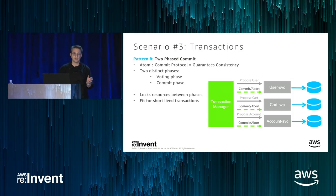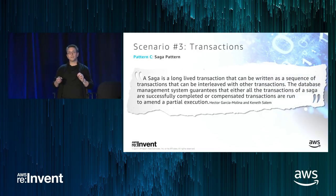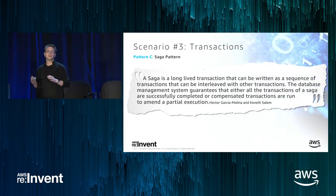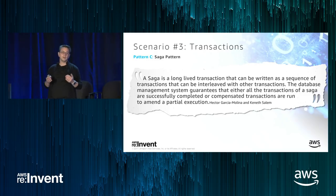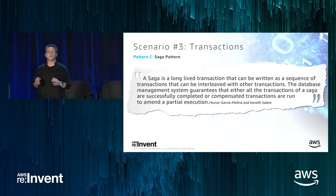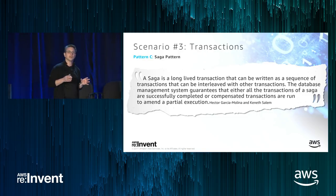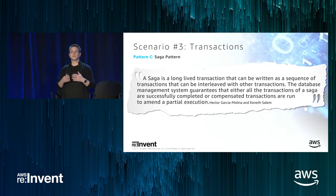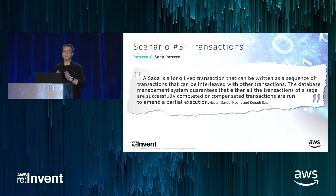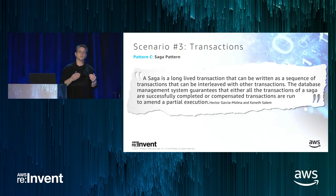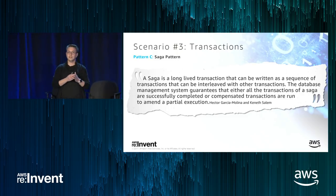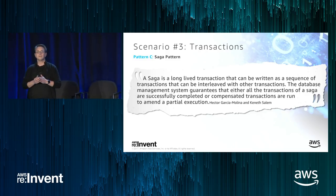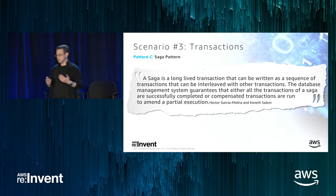For long-lived transactions, the saga pattern is a good approach. The saga pattern is not new — it was written about in a paper by Hector Garcia-Molina and Kenneth Salem in 1987 from Princeton University, originally for long-lived transactions in a single database. In more modern times, the pattern is used for distributed systems. What the saga pattern does is take your transaction and split it into multiple serial steps. The saga is responsible for maintaining consistency — either completing all transactions or rolling them back via compensating transactions.